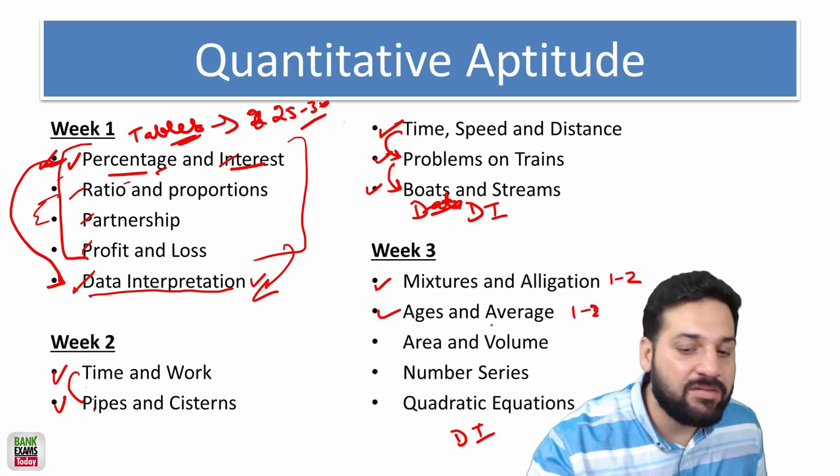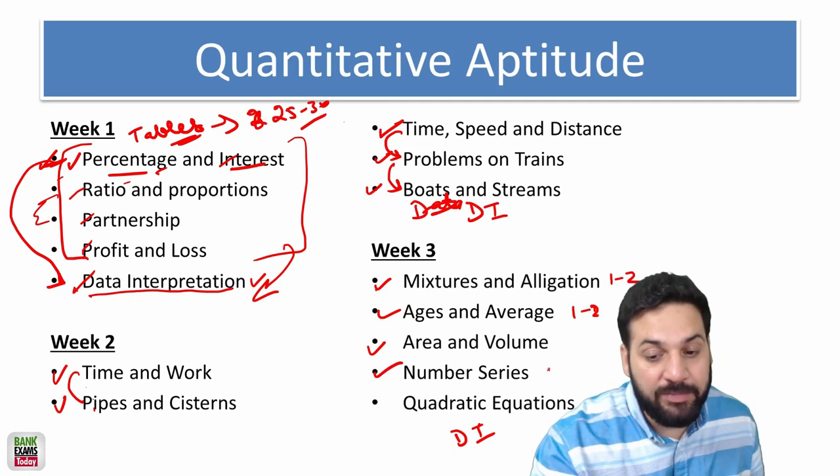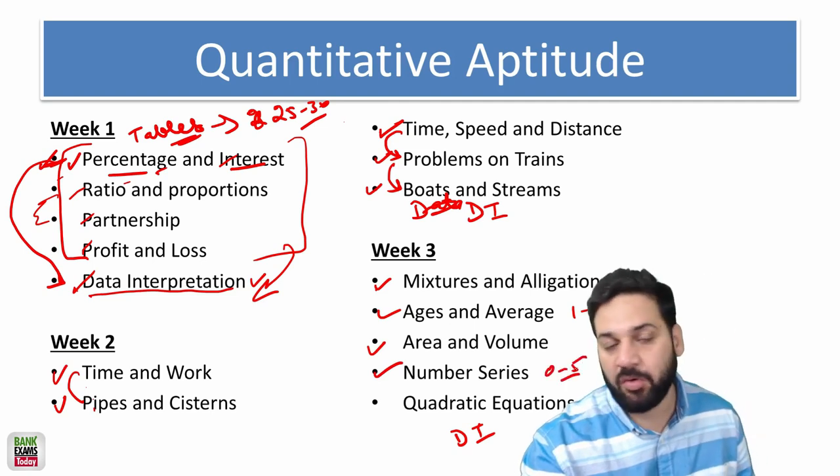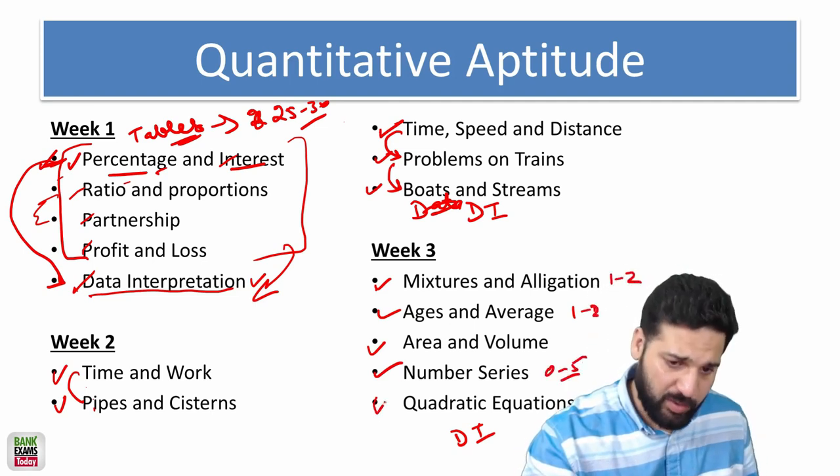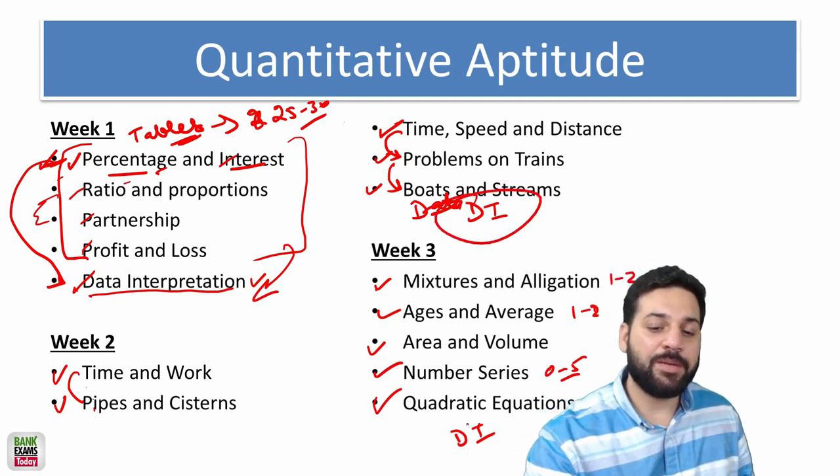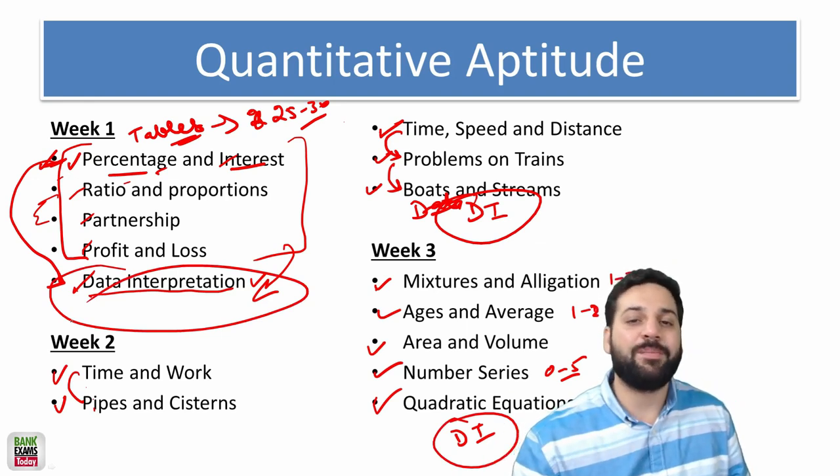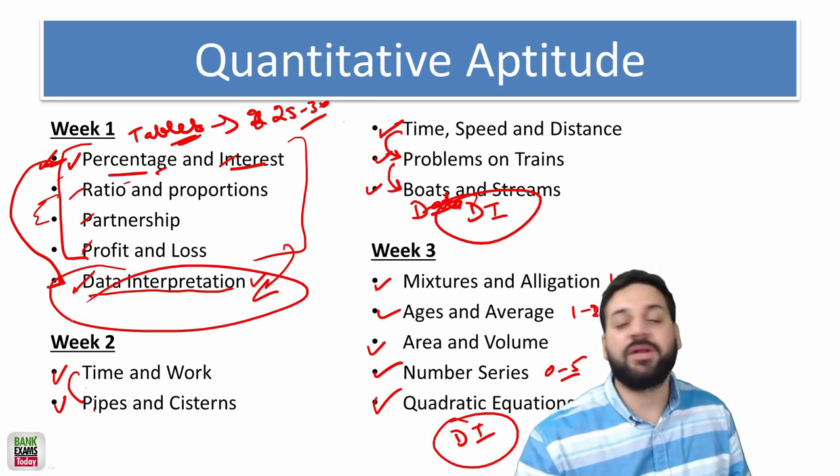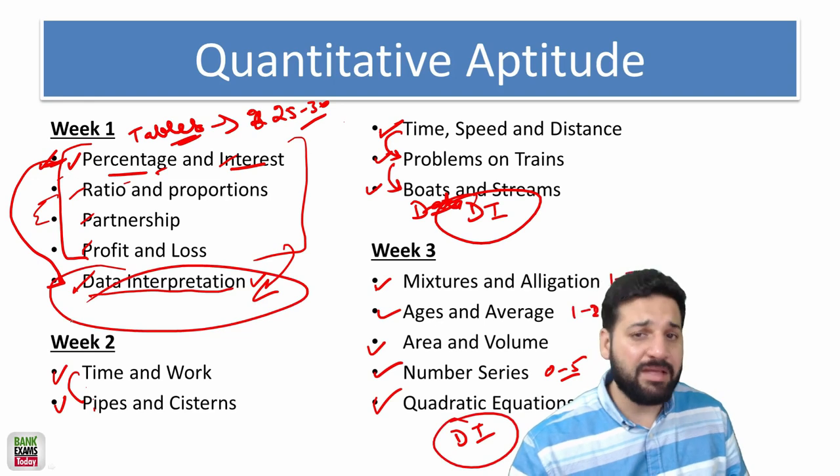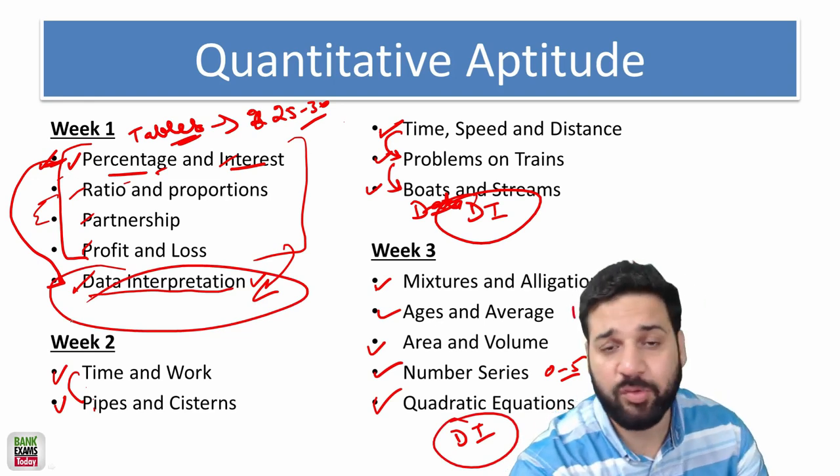Then in week three, mixture and allocation, maybe you'll be getting one or two questions. Then ages and averages, like one or two questions from these particular topics. Area and volume, number series, maybe you will be getting zero to five questions. Then quadratic equations. In all these three weeks you can practice the data interpretation because data interpretation is the most important part of quantitative aptitude. Maybe there will be three sets, maybe four sets of data interpretation, which is quite common these days.